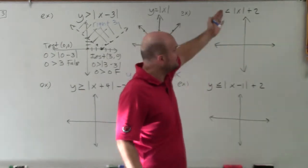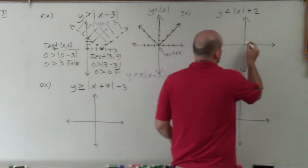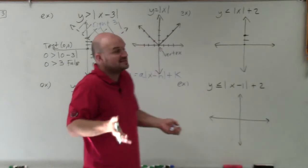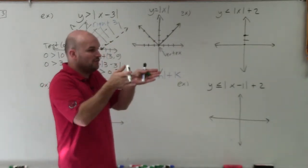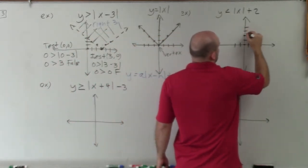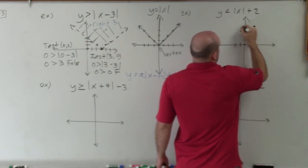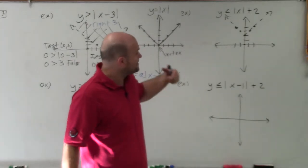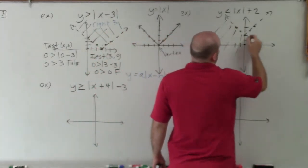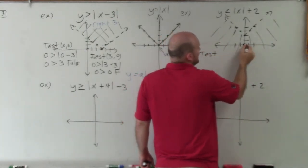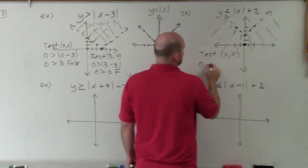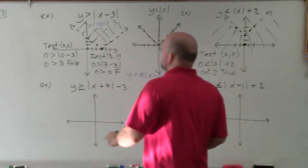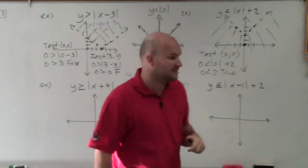For the second example, I have y less than absolute value of x plus 2. That transformation tells me to go up two units, so my vertex shifts from (0, 0) up to (0, 2). I graph the parent graph from there: up 1, over 1 in both directions. Since it's less than, it's a dashed line, and I know the shading is below. To verify, choose the test point (0, 0): 0 is less than absolute value of 0 plus 2, so 0 is less than 2 — true. Since this point is true, all the points below it are true, confirming we shade below.